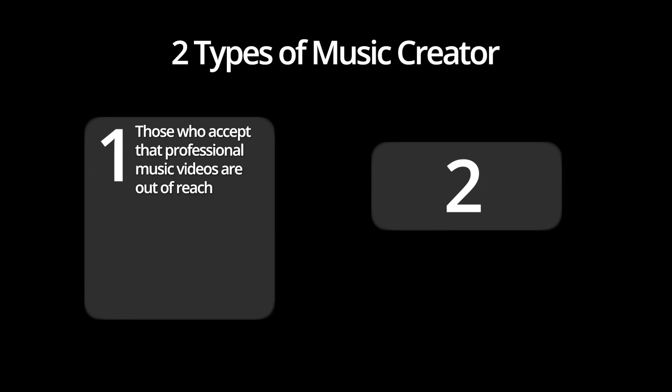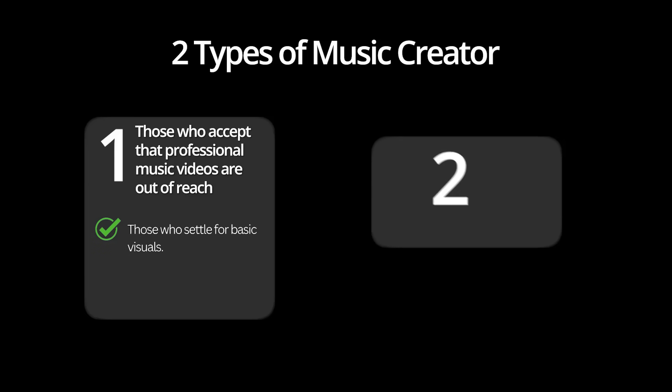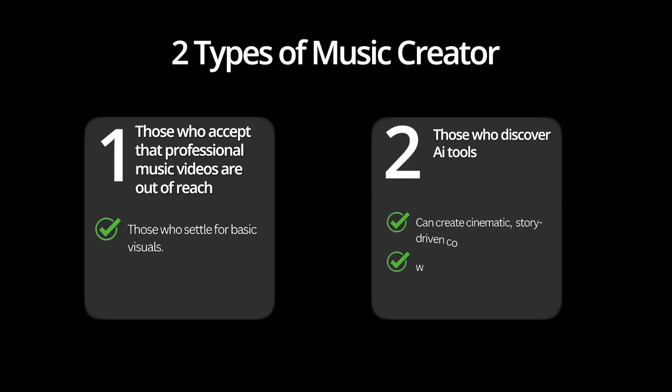The traditional video creation process is absolutely overwhelming for most creators. I always loved music and dreamed of creating visual content to go with songs, but every time I looked into it, I felt completely defeated. If you try to do it yourself with basic equipment, the results often look amateur and unprofessional, which can actually hurt your music's reputation. There are two types of music creators: those who accept that professional music videos are out of reach and settle for basic visuals, and those who discover AI tools and create cinematic content without traditional production costs. That difference is game-changing — and this is where OpenArt completely transformed my approach to music video creation.